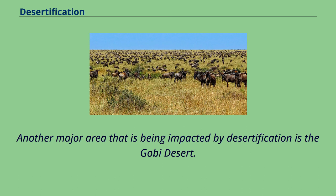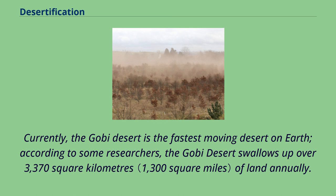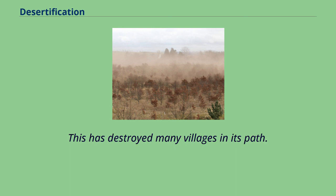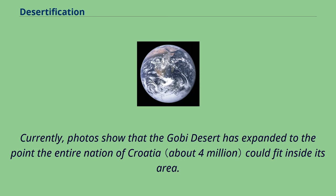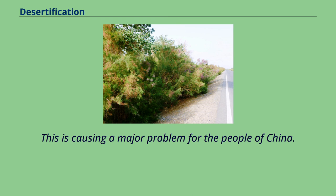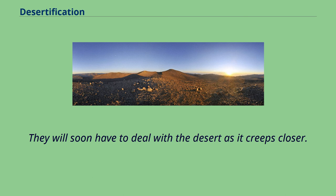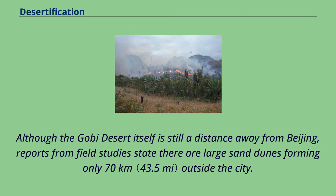Another major area being impacted by desertification is the Gobi Desert. Currently, the Gobi Desert is the fastest-moving desert on Earth. According to some researchers, the Gobi Desert swallows up over 3,370 square kilometers of land annually, destroying many villages in its path. Photos show that the Gobi Desert has expanded to the point where the entire nation of Croatia could fit inside its area. Although the Gobi Desert itself is still a distance away from Beijing, reports from field studies state there are large sand dunes forming only 70 kilometers outside the city.